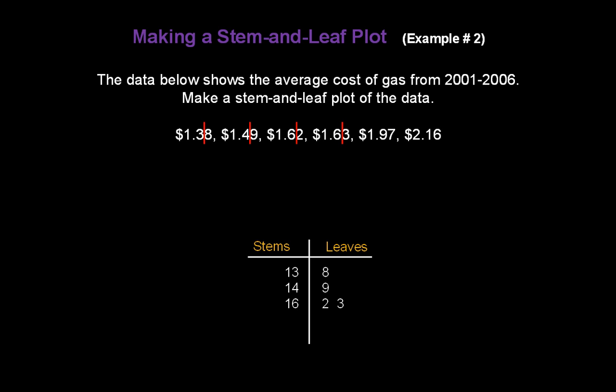$1.97, break between the 9 and the 7. A new stem of 19, a leaf of 7. And finally, $2.16 breaks between the 1 and the 6. We have a 21 stem and a 6 in the leaf.